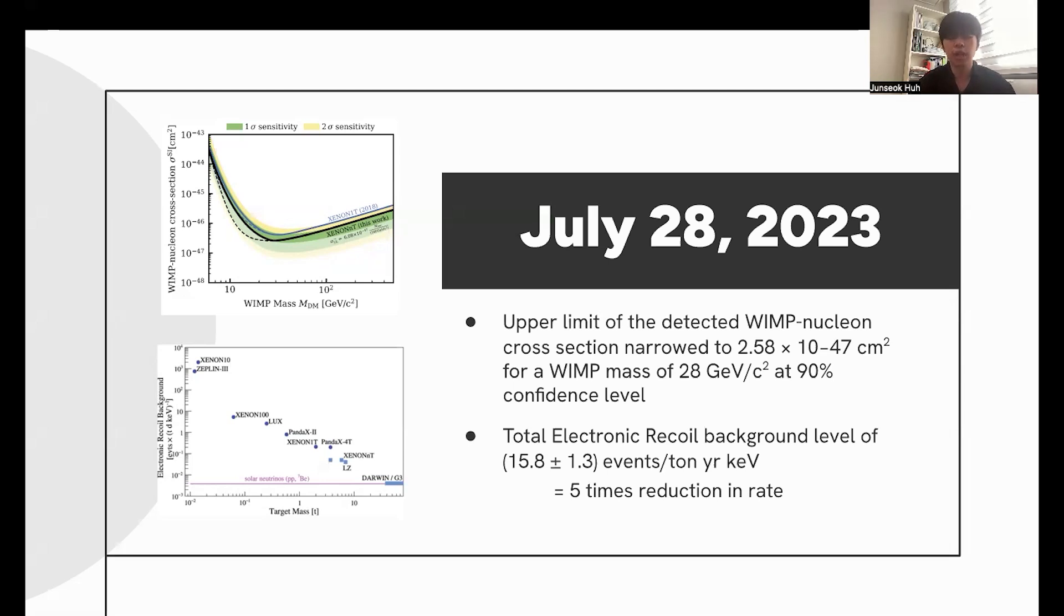The total electronic recoil background level was reduced to 15.8 plus margin of error of 1.3 events per ton year in kilo electron volts, which is a five times reduction in rate compared to the previous experiment of xenon 1T in 2018.